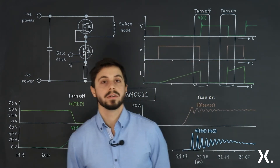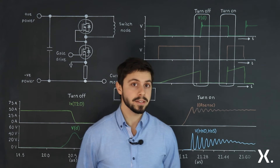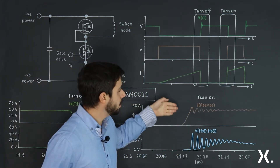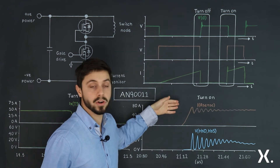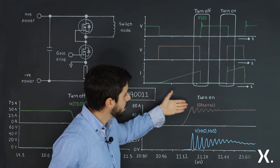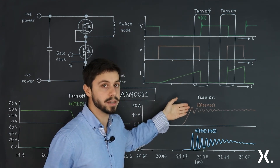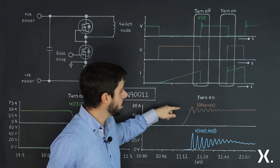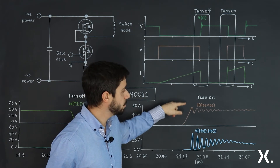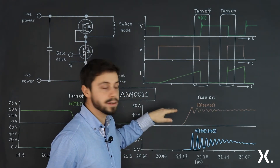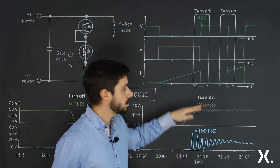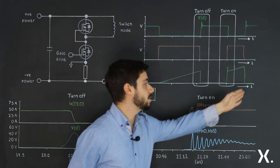Moving on to the turn on event, seen here on my left. We assess the current by looking at the first slope measuring di/dt, then the second slope measuring di/dt. We look at the overshoot and peak current value, the oscillations, the damping factor, steady state value and settling time.